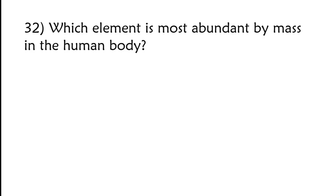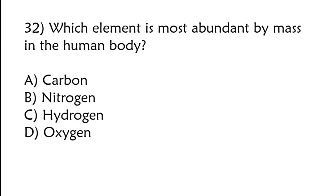Which element is most abundant by mass in the human body? Carbon, nitrogen, hydrogen, oxygen? Correct answer is option D, oxygen.